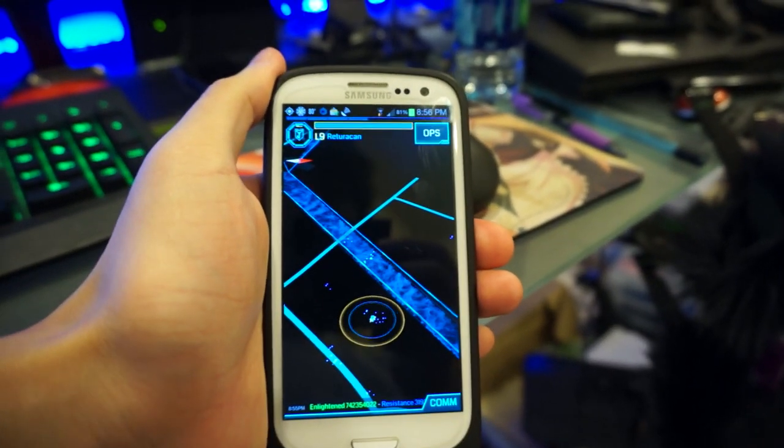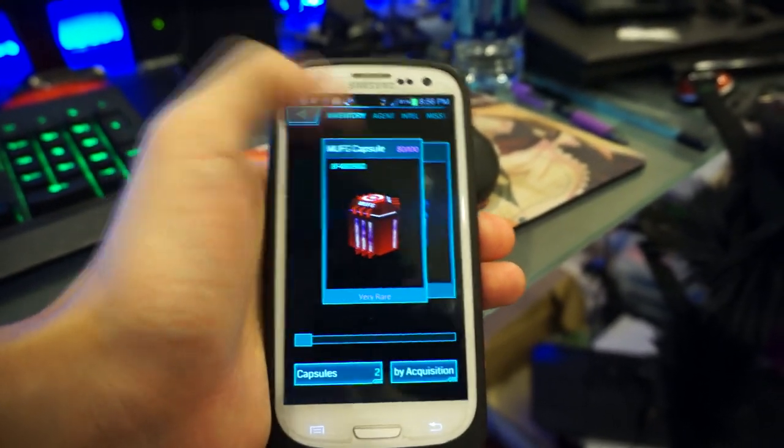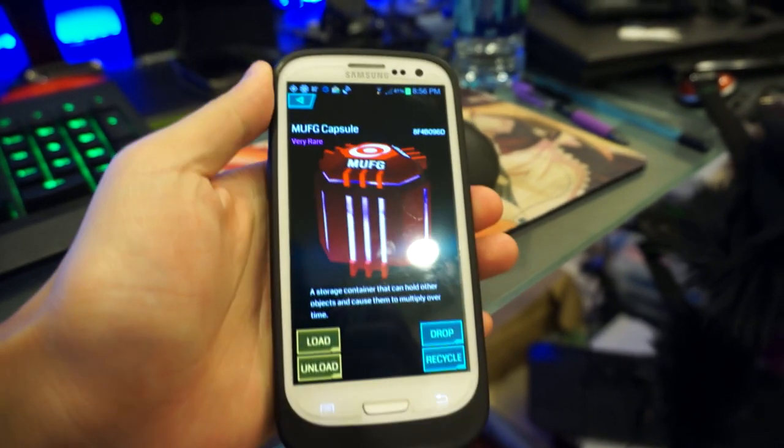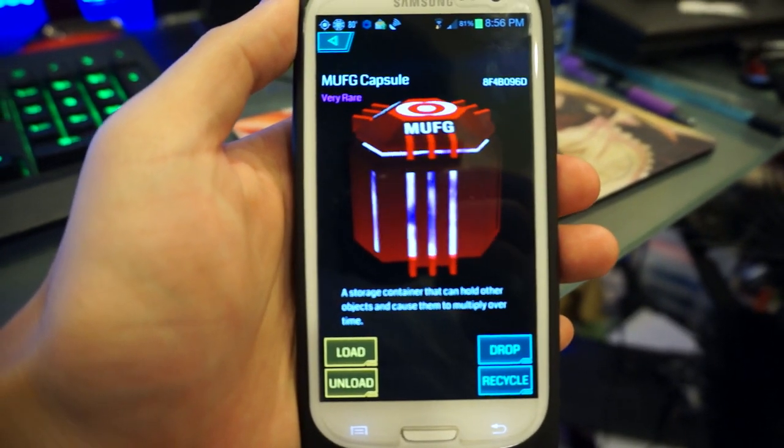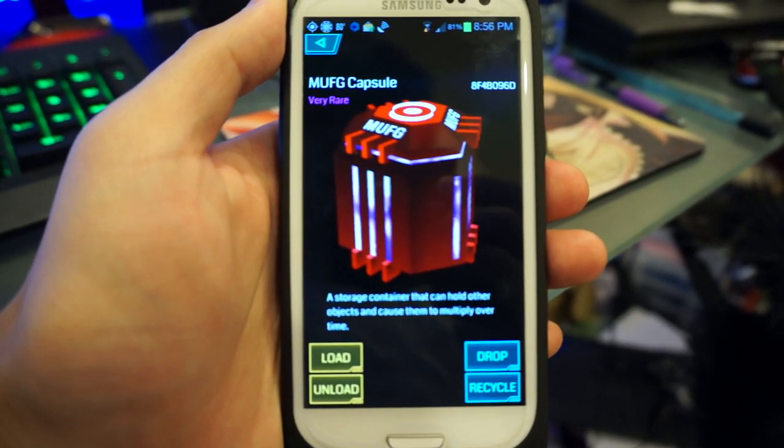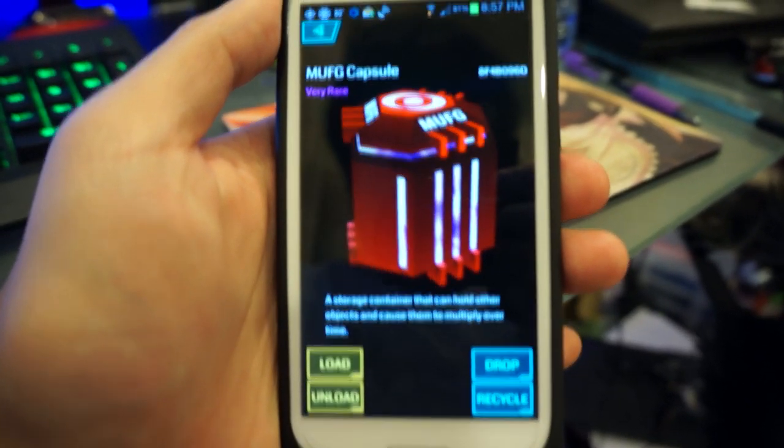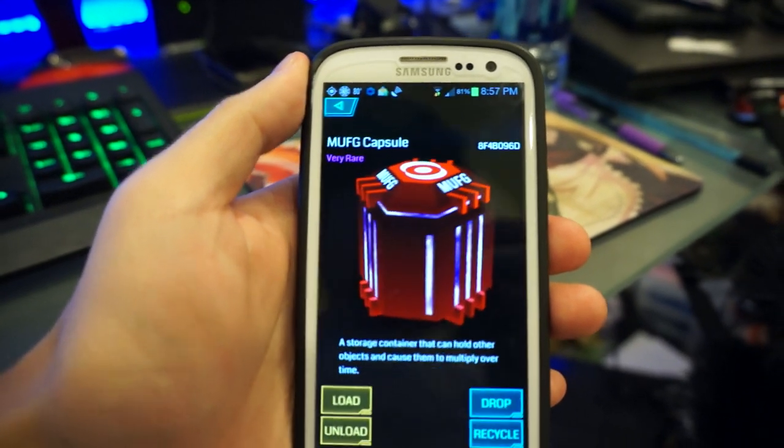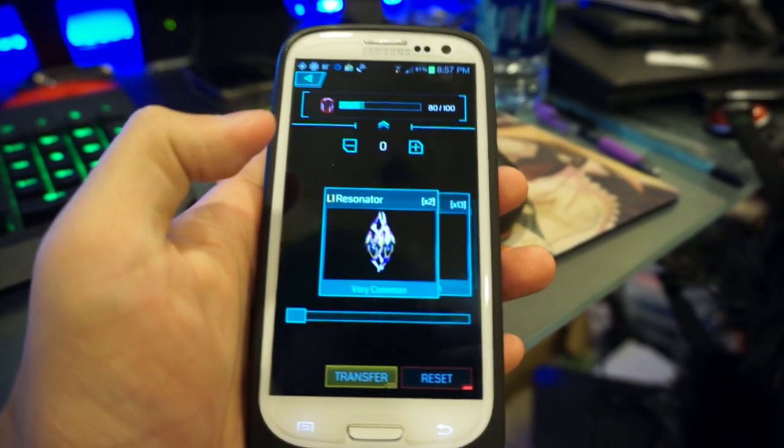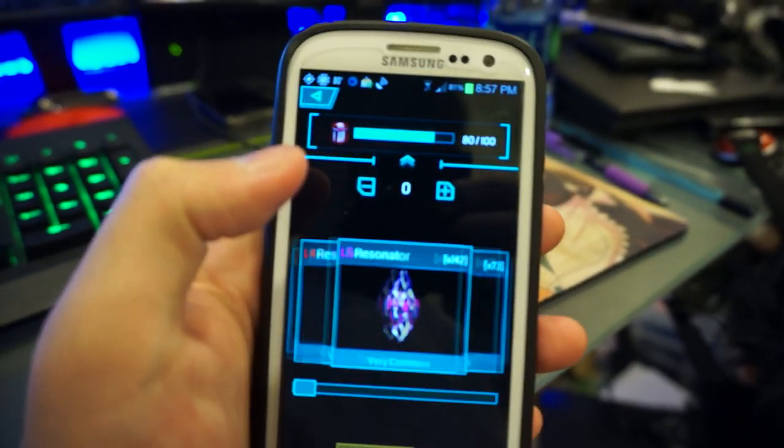Alright guys, so a couple weeks ago during my trip to AX, I had actually picked up this one item from a random portal I just happened to hack and thought nothing of it. Completely forgot about it until now. This is a MUFG capsule. What it does is that you throw items into it and over time it replicates them.